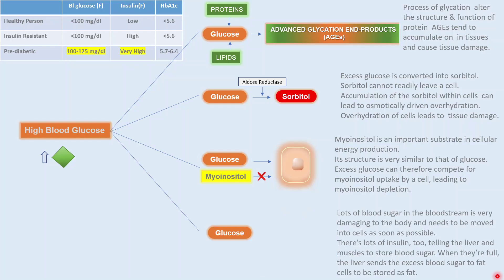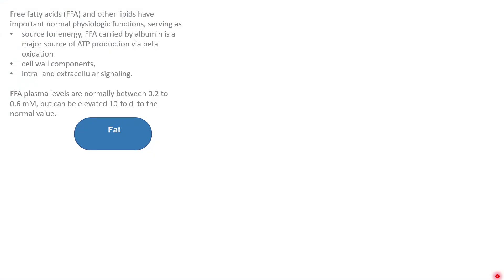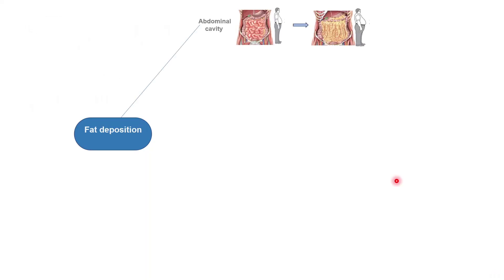A lot of blood sugar in the bloodstream is very damaging to the body and needs to be removed into the cell as soon as possible. There is a lot of insulin telling the liver and muscles to store blood sugar, but the liver and muscles say they already have excess glycogen and are not in a position to store more glucose. So the liver converts excess glucose into fat. Fat is useful to the body — it serves many important physiological functions: it is a good source of energy, a component of cell membranes, and useful in intracellular and extracellular signaling. But the problem is when the amount of fat in blood is far above normal. The body stores excess fat in the abdomen as belly fat.